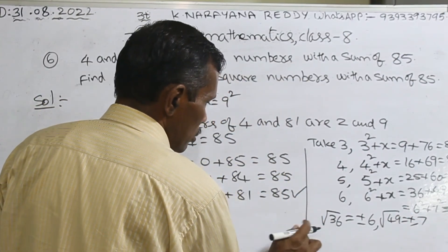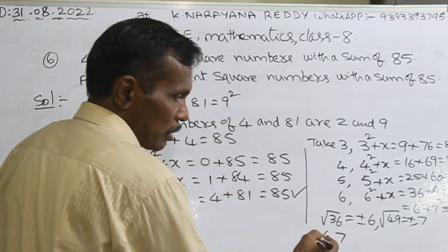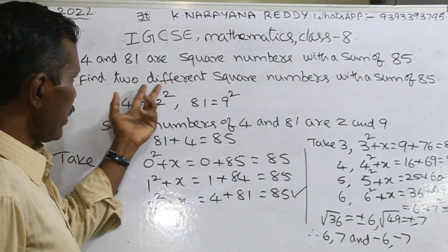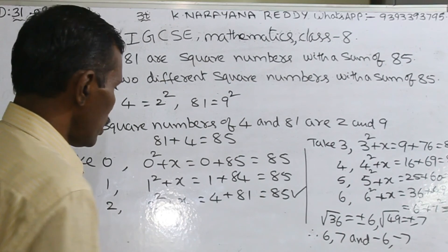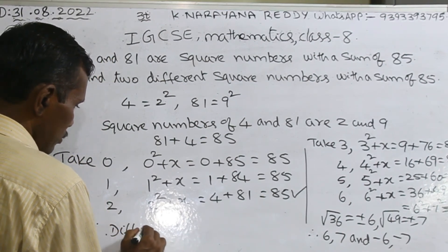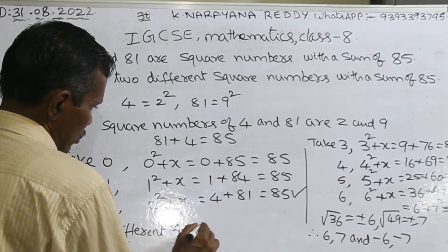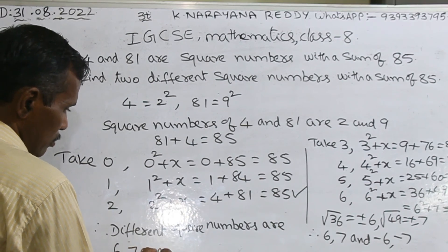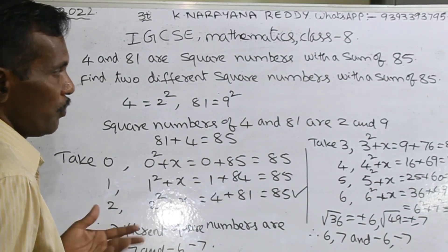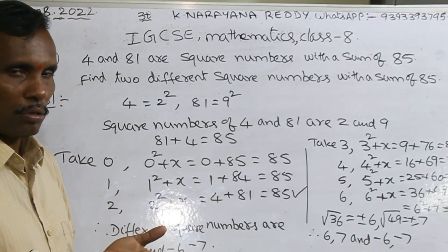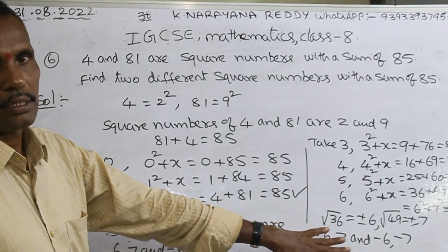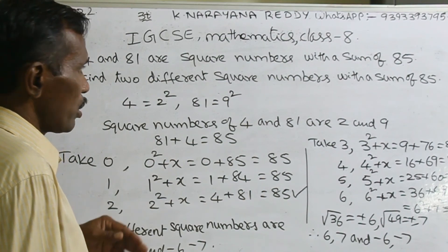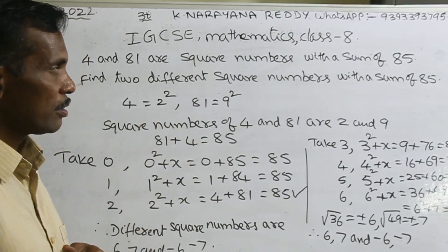6 square plus 7 square. 6 square, that means 36. Square root of 49 is plus or minus 7. So what is the answer now? Therefore, the answer is plus 6 plus 7 and minus 6 minus 7. Find two different square numbers with the sum of 85. Therefore, different square numbers are 6 comma 7 and minus 6 comma minus 7. If you take 8 square, 64 plus 21, there is no perfect square for 21. So these are the two pairs, different squares whose sum is 85. So initially you can find the square of numbers whose sum is 85. For more updates, subscribe to the channel. Thank you.